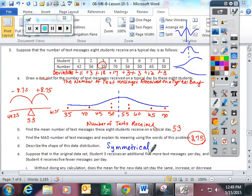Another couple questions. Suppose that the original data set, student three receives an additional five more text messages, so this is going to change to 38. And student four receives five fewer, so student four had 70, we're going to change it to 65.